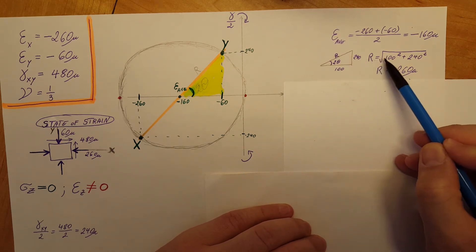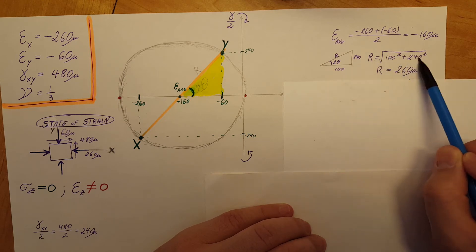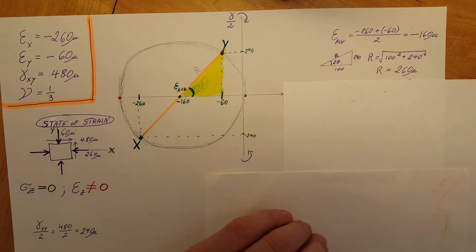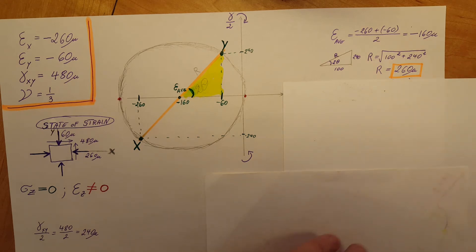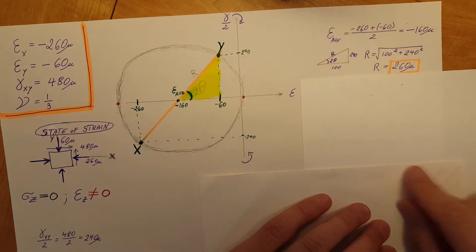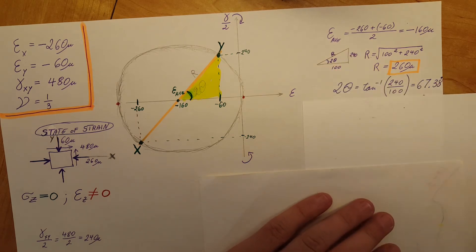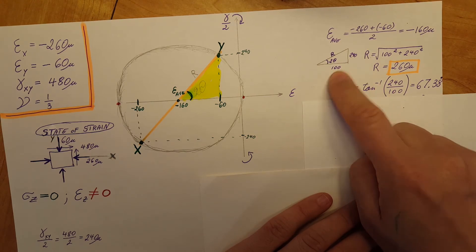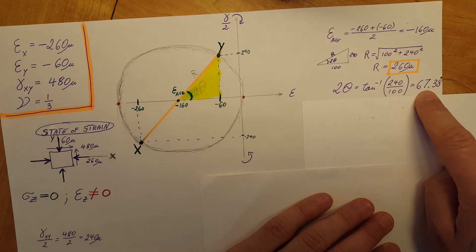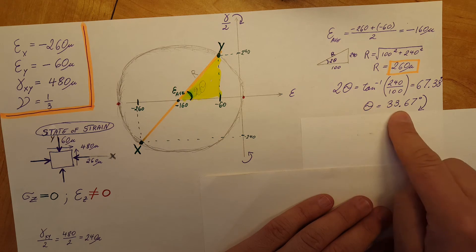To find R, we calculate the square root of 100 squared plus 240 squared, which gives us our value for R of 260 microns. This R is crucial for finding theta and the magnitudes. For theta: 2-theta equals the inverse tangent of 240 over 100, giving us the angle. Dividing by 2, theta equals 33.67 degrees.